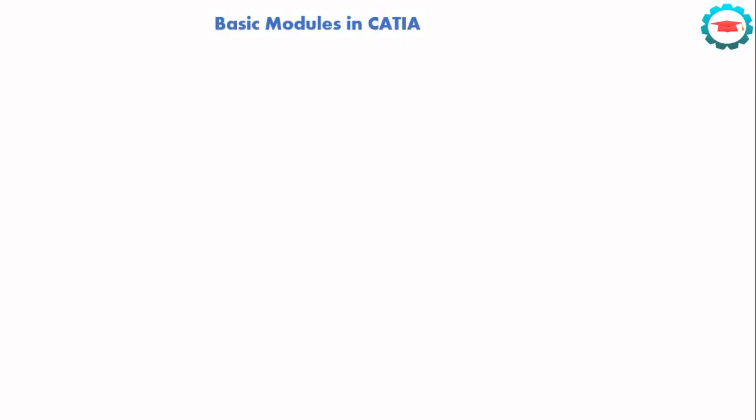Welcome back. In this lesson, I'm going to take you through the basic modules in CATIA. Let us first define what is a module. A module is basically a workspace, a work environment in any CAD software in which you can do certain types of design.